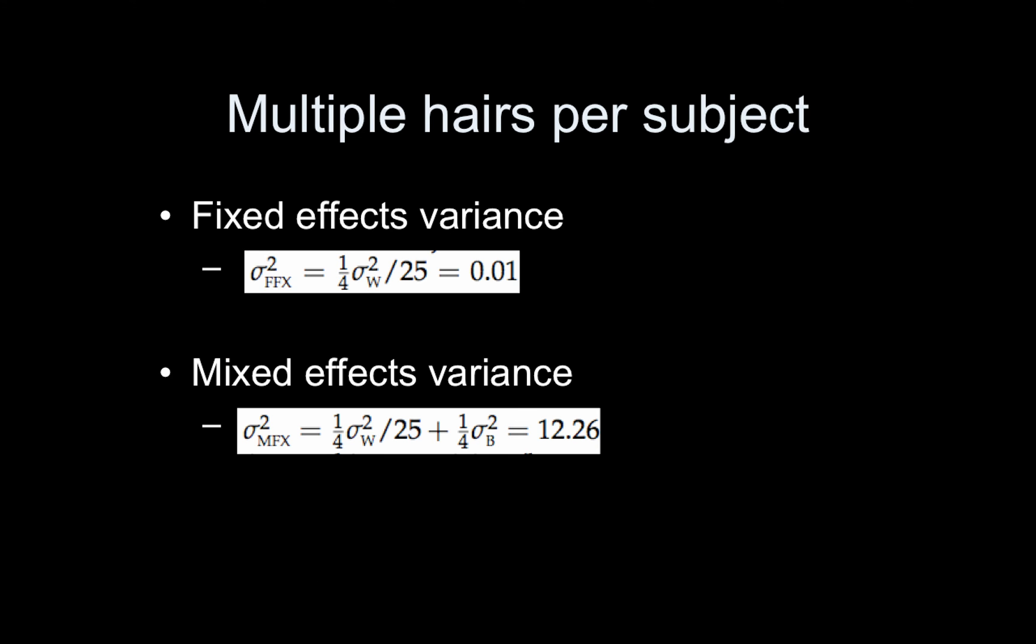So what if we had multiple hairs per subject? This is important. So this is analogous to adding more runs of data to a subject in an fMRI study. Let's say we had 25 hairs per subject. So the impact that has is the within subject variance before combining over our four subjects is we divide that by 25. And then we divide by four to average over the four subjects. So that dropped it considerably to 0.01.